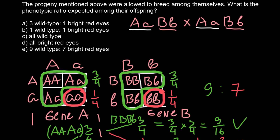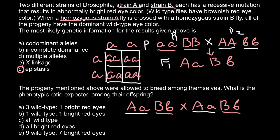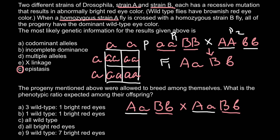Let's return to our problem. The correct answer is answer E. We can expect nine wild-type brownish-red eye color to seven bright red eyes in the progeny. That's all for today. Thank you for your attention. Please subscribe for my new videos, which I post almost every day. Thumbs up if you like this video, and please write your comments and questions if you have any. See you in the next video. Goodbye.